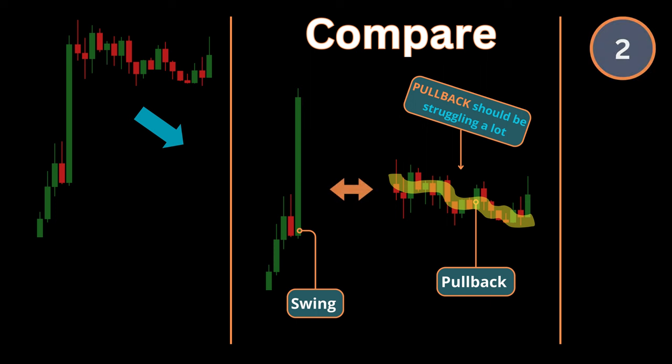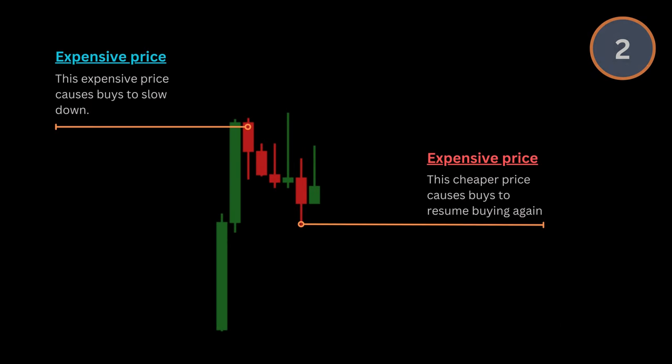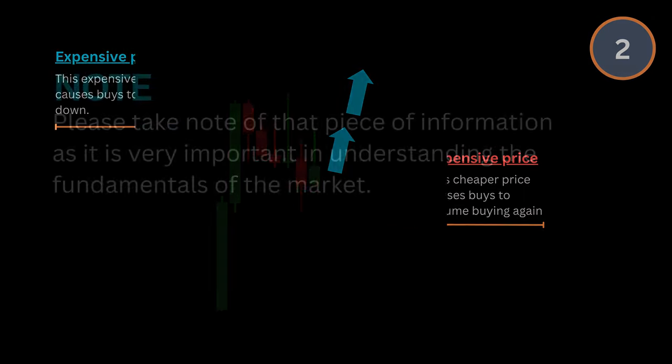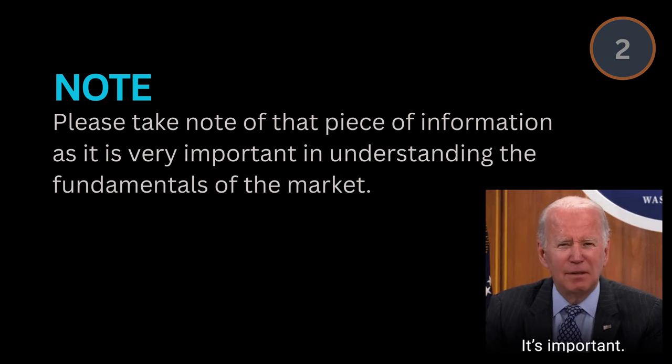This is because pullback happens when the price momentum drops which leads to the price getting cheaper which becomes a very attractive price discount for buyer or seller participants which usually leads to the market trend to resume again when the price discount is convincing enough. Please take a moment to let that sink in a bit.